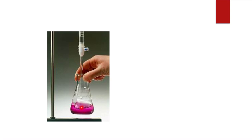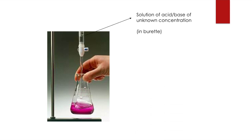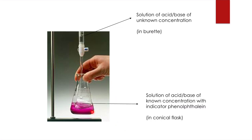What is going to happen afterwards? This indicator is going to change color and tell me that the neutralization has occurred and the reaction has ended. Once this color appears, I'm going to stop adding the base and take some readings. So, the solution of unknown concentration goes in the burette, and the known concentration solution goes in the conical flask along with the indicator. The indicator commonly used is phenolphthalein — a chemical that changes its color once neutralization has been reached, so we know to stop.